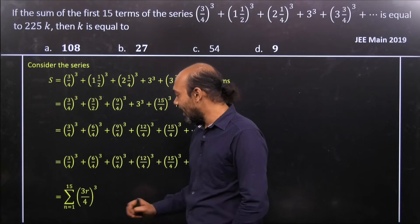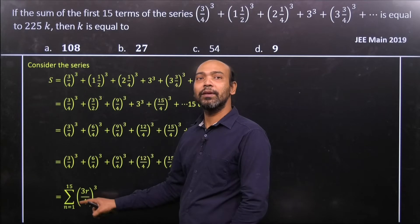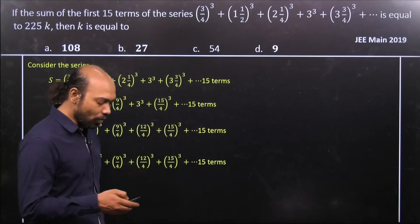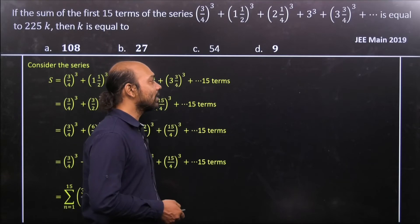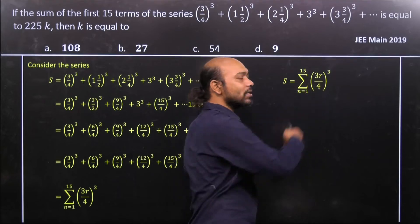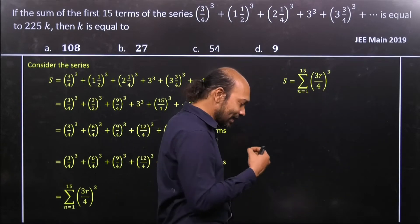That's actually the sum. Now see that here if I'm trying to obtain this 3/4 sum, our job is done. Let's go ahead. So let's consider (3r/4)³. Now see that here 3/4 is a constant.